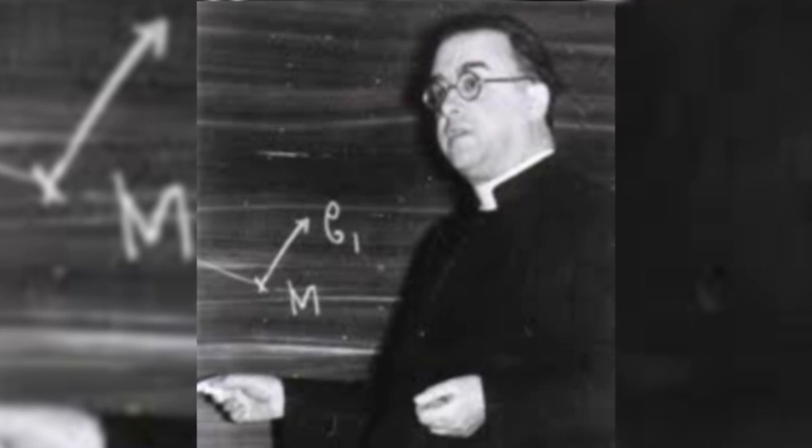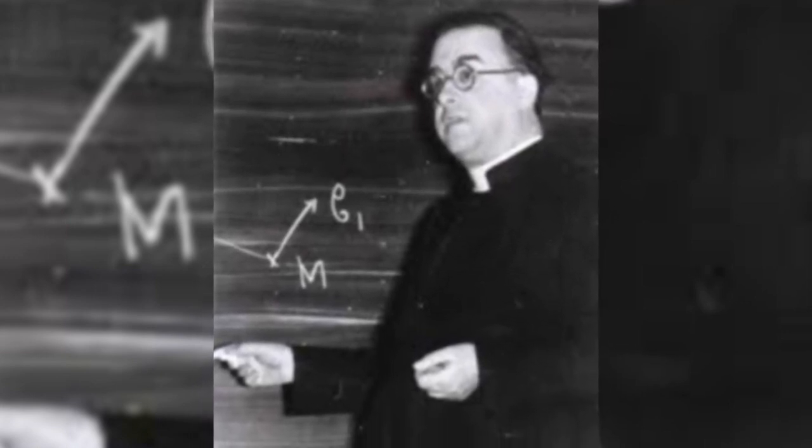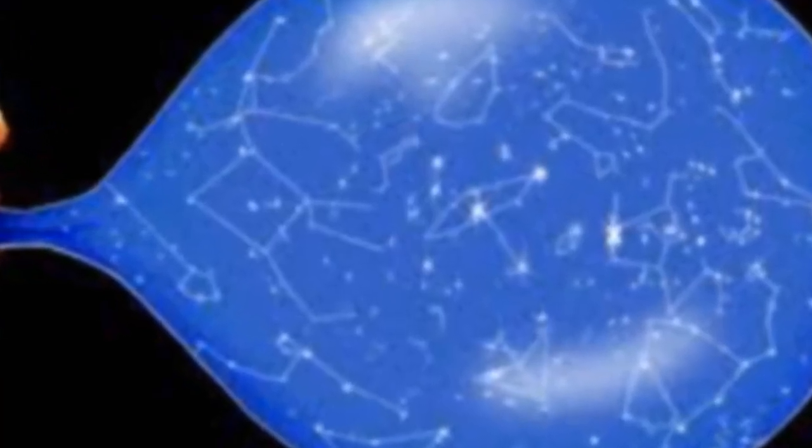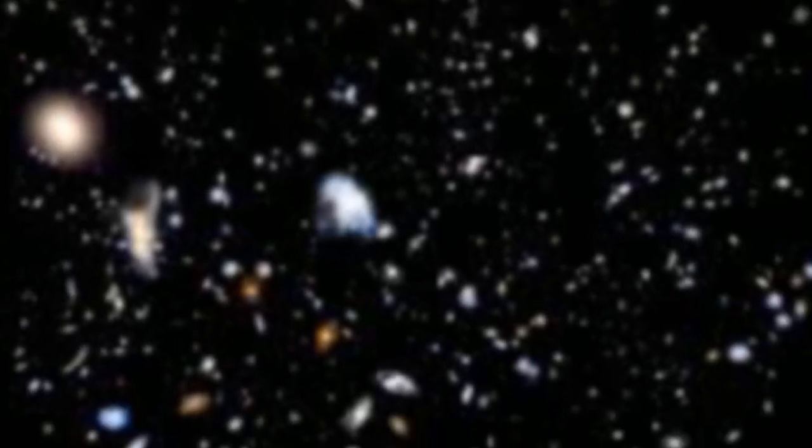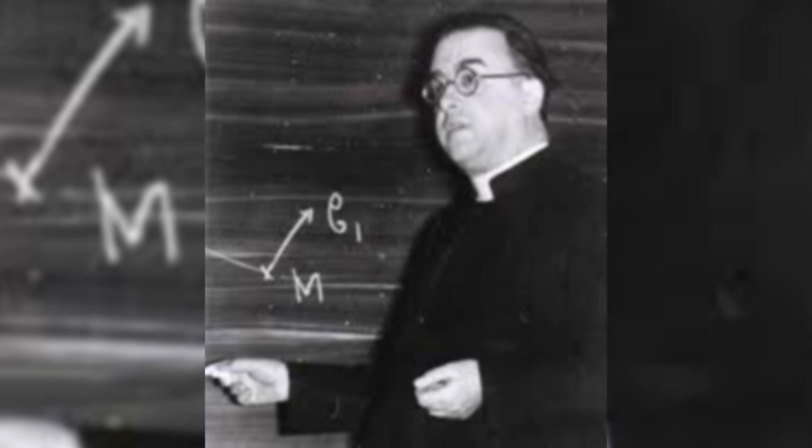In 1927, a creationist Catholic priest named George Lemaitre proposed the idea that the universe was expanding and, at some point in the past, must have been once so closely compacted that all matter in the universe must have been in the same place. This was presented as evidence for a creation event.